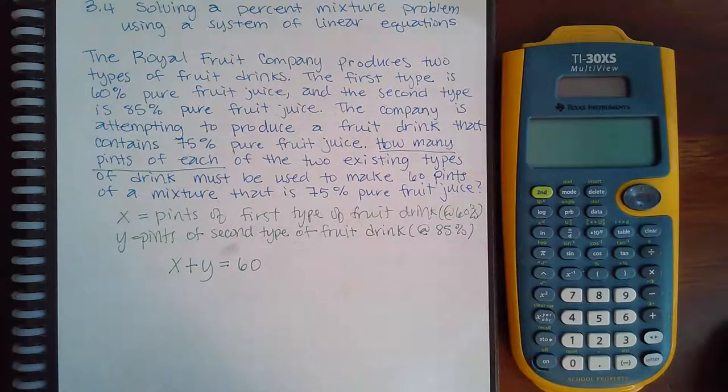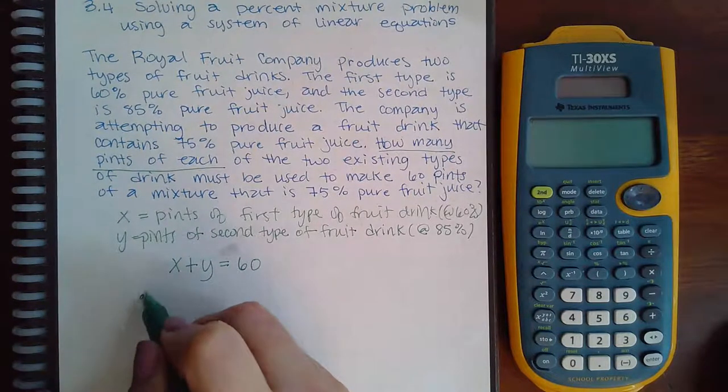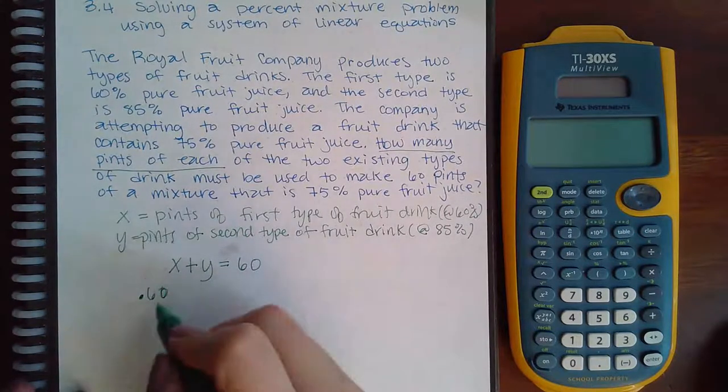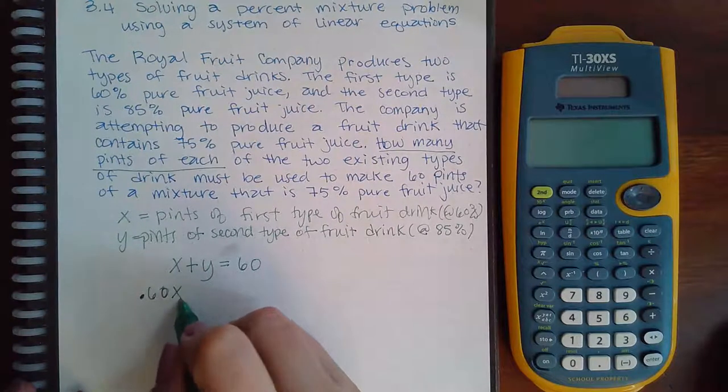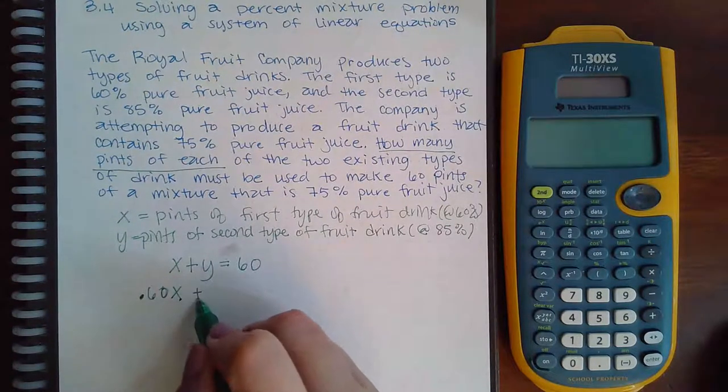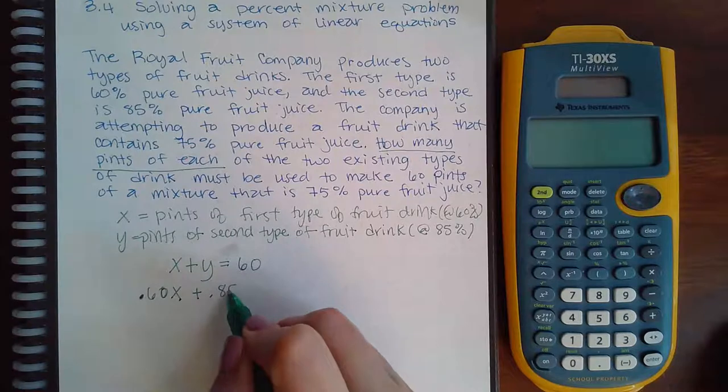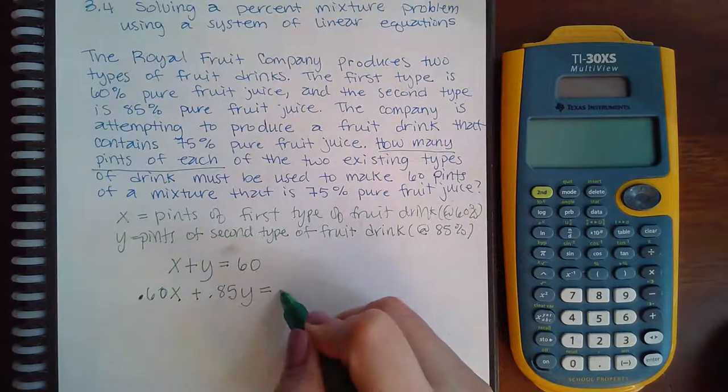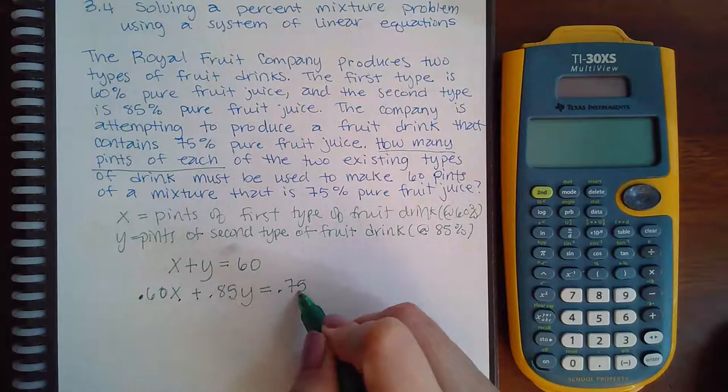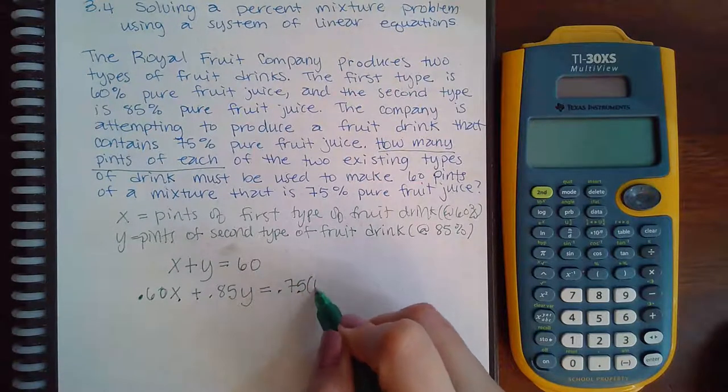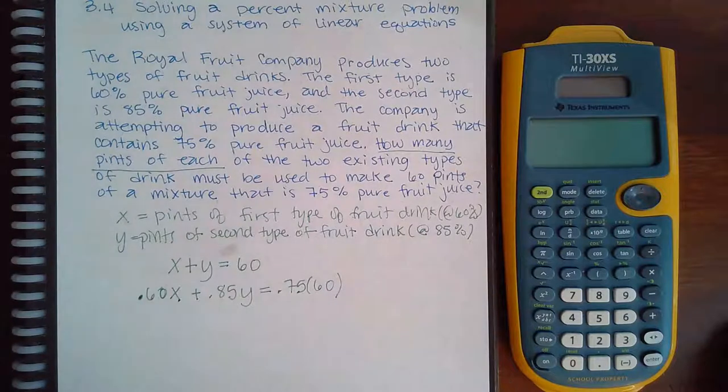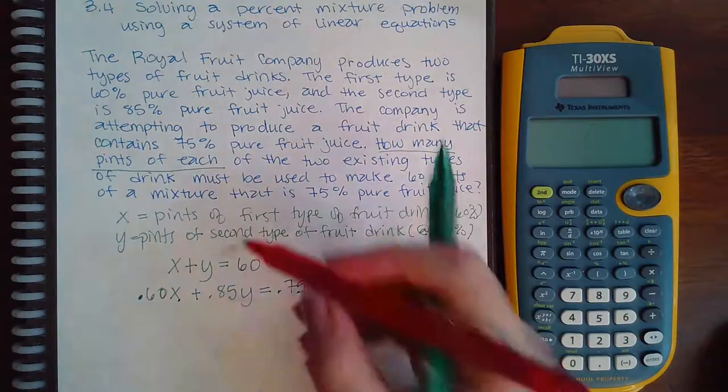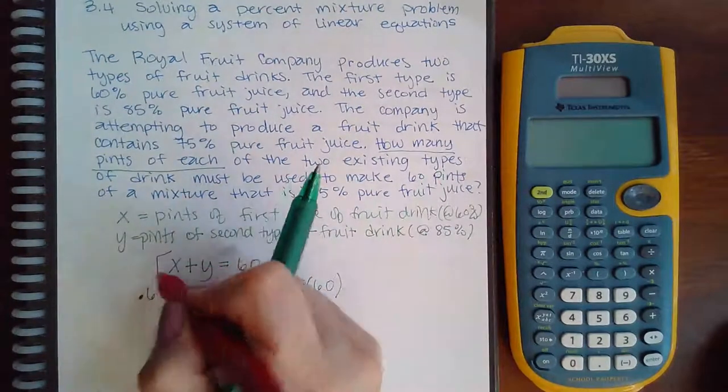Now for the mixture equation. I'm gonna have 60 percent times the amount from the first fruit drink plus 85 percent times the amount of the second fruit drink, which should give me a total of 75 percent of the new mixed drink which I know has to be 60 pints. If I want to eliminate a variable I will multiply the top equation by negative 0.60.